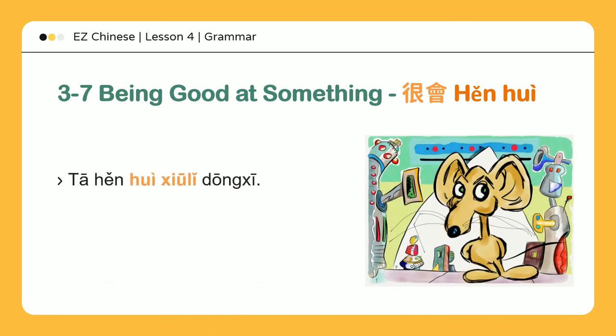修理 — Repair. 东西 — Thing. 修理东西 — To repair things. 他很会修理东西 — He really knows how to repair things. 坏了 — Broken/Out of order. 修理好 — Fixed/Repaired. 东西坏了，他会修理好 — When things get broken, he knows how to fix them.